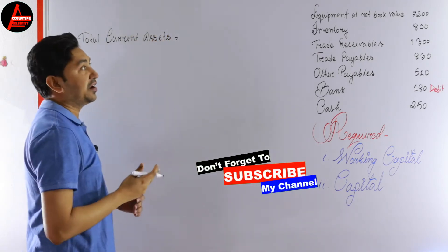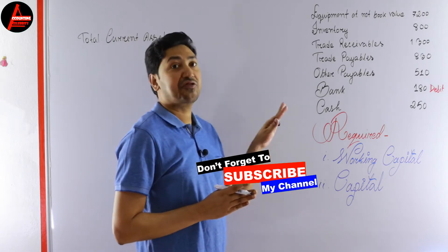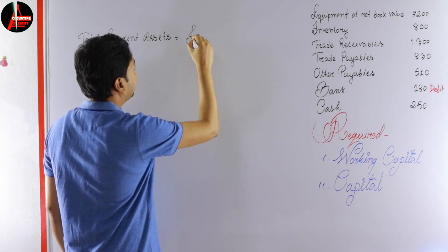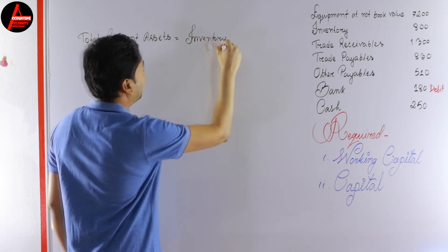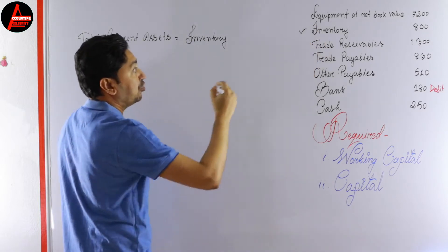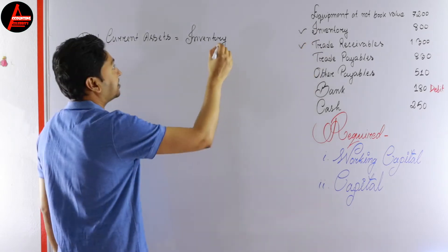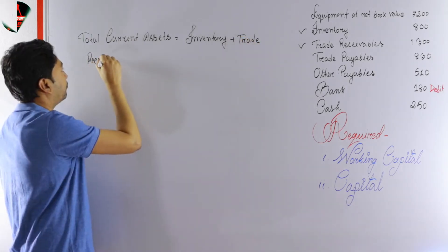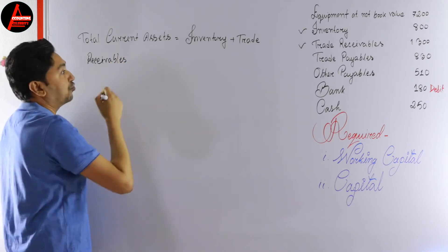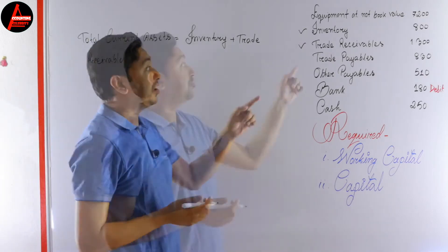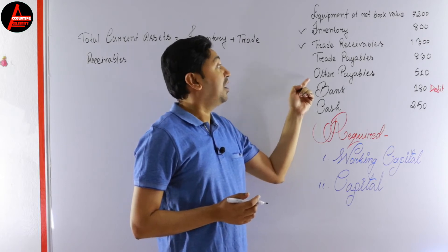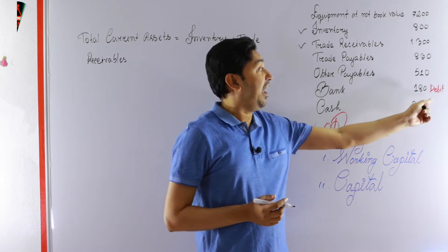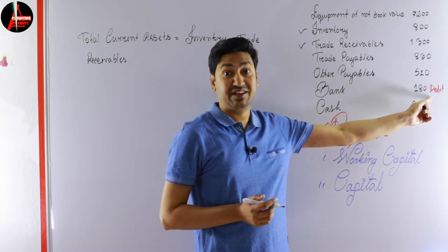Looking at the current assets given in the question: first, inventory is a current asset, so we write inventory. Then trade receivables — that is also a current asset. Note that trade payables is a current liability, so we will not include it here. Other payables are also a current liability. Next, bank — shown as $180 with a debit balance.